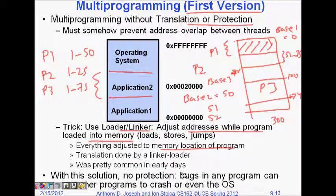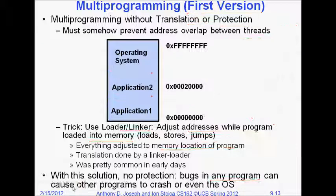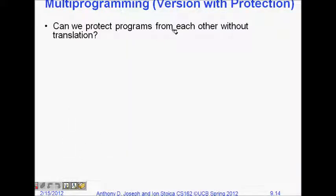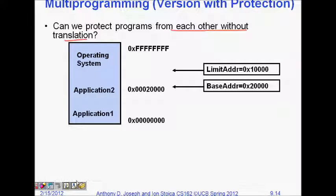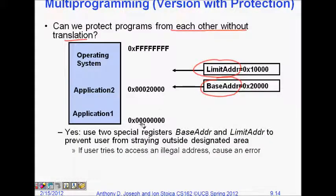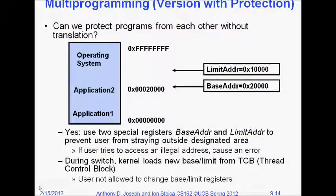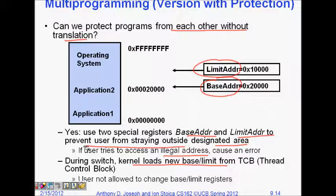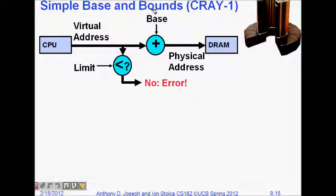This is multi-programming version one, but it has bugs — if a program somehow gets the wrong base register value, it can crash other programs or the OS itself. So we need better protection. The solution is to give each program both a base address and a limit address. The limit address ensures the program cannot access anything outside its base to base+limit range. If a user tries to access such an address it becomes an illegal address and gives an error. During a context switch, the kernel loads new base and limit registers for the incoming process.